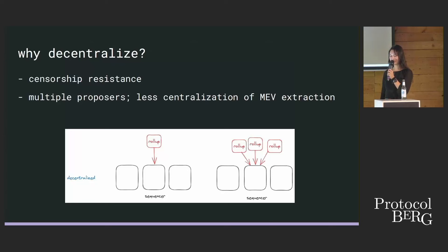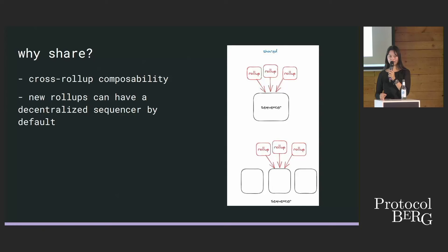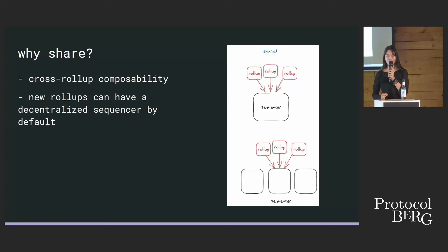Why do we want to decentralize? One thing is censorship resistance — with multiple sequencer entities, they won't be able to exclude transactions as easily. With multiple proposers, you also have less centralization of MEV extraction. Why share? Cross-rollup composability is highly touted: if you have a shared sequencer and multiple rollups are using it, you can easily bridge, swap tokens, and transfer data between rollups. Currently you'd have to go down to L1 and bridge up to the other rollup. Also, new rollups can have a decentralized sequencer by default just by launching on an existing shared sequencer.